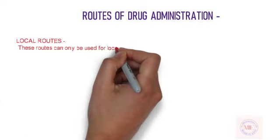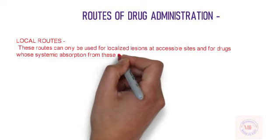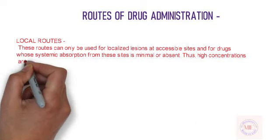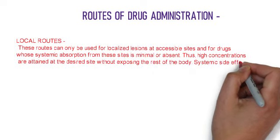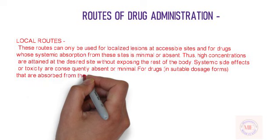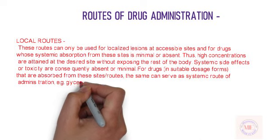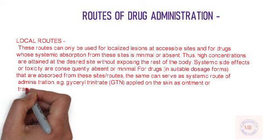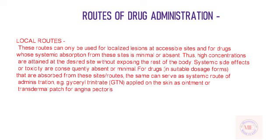Local routes: These routes can only be used for localized lesions at accessible sites and for drugs whose systemic absorption from these sites is minimal or absent. Thus, high concentrations are attained at the desired site without exposing the rest of the body. Systemic side effects or toxicity are consequently absent or minimal. For drugs in suitable dosage forms that are absorbed from these sites, the same can serve as systemic route of administration, e.g. glyceryl trinitrate (GTN) applied on the skin as ointment or transdermal patch for angina pectoris.